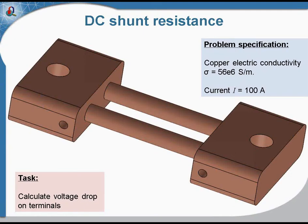This is the DC shunt resistance example. The shunt allows the measurement of current values which are too large to be directly measured by an ammeter. Essentially, the shunt is a resistance with an accurately known value, and it is placed in parallel with the voltmeter. In order not to disrupt the circuit, the resistance of the shunt is normally very small.